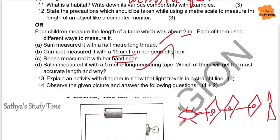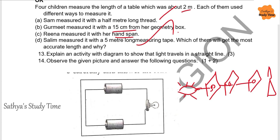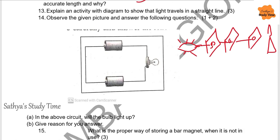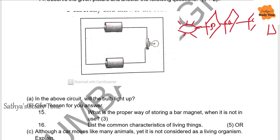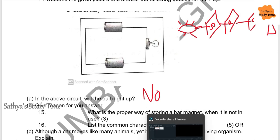Observe the given circuit picture and answer: Will the bulb light up? No. Give a reason: the positive terminal is connected to another positive terminal, so the bulb will not glow.